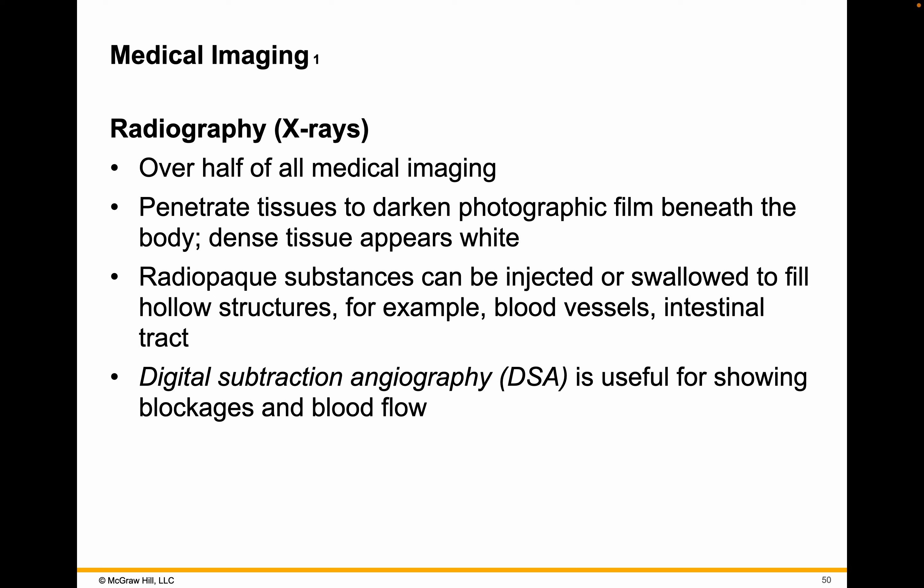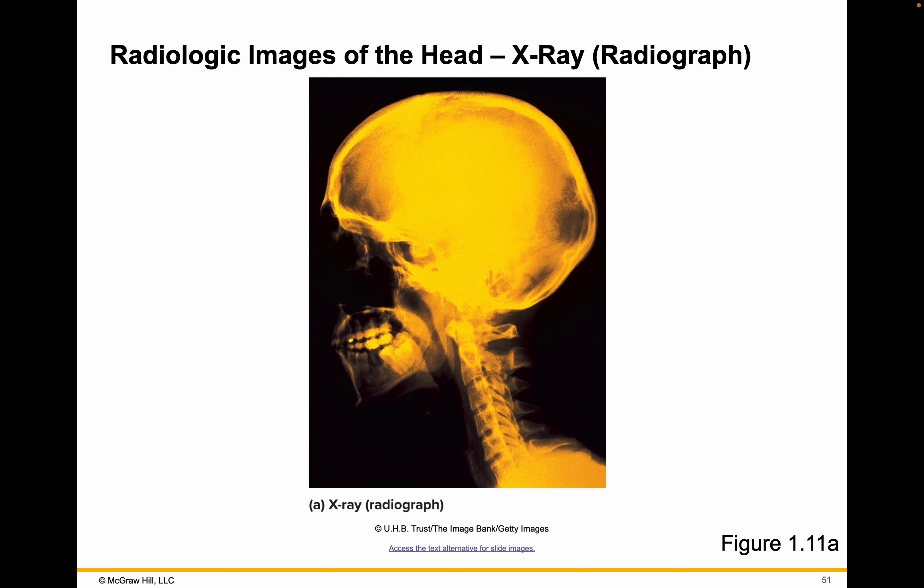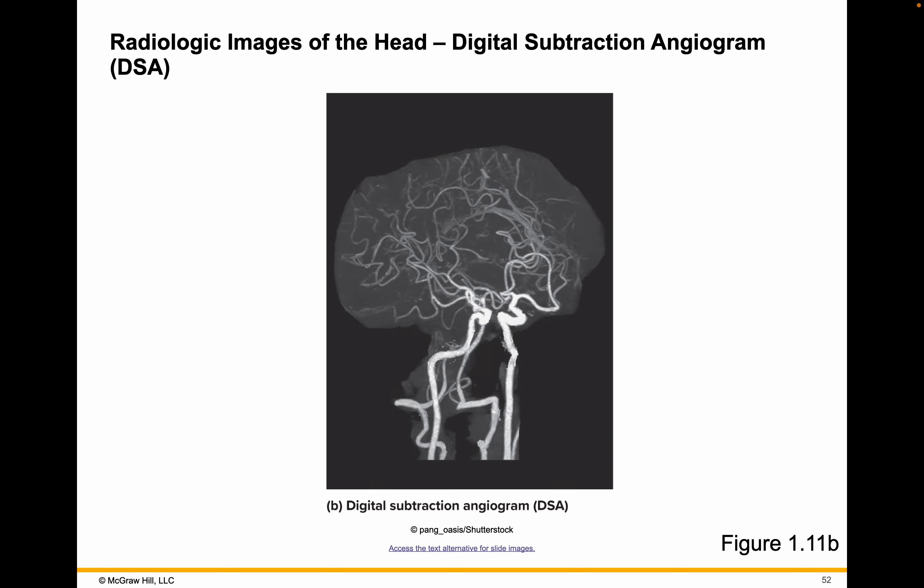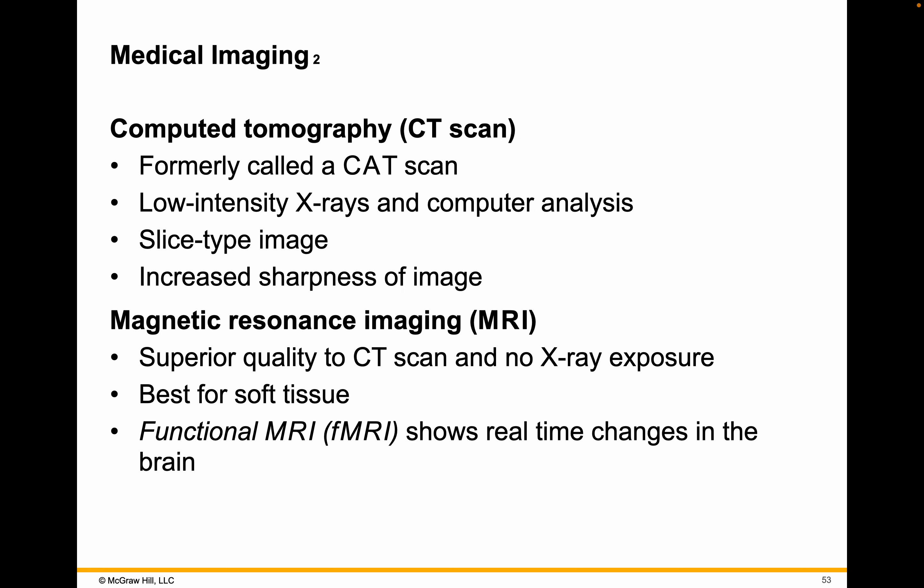If we talk a little about medical imaging: radiography, strictly speaking, is just x-rays, and over half of all medical imaging is x-rays. We also have digital subtraction angiography using blood flow — here's a radiological image of the head, and here's a DSA of the head. Computed tomography, or CT scan — also often referred to as a CAT scan, although it is not — are still x-rays, low-intensity x-rays with computer analysis.